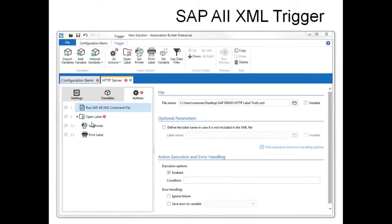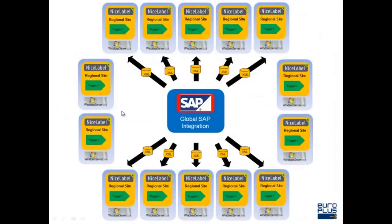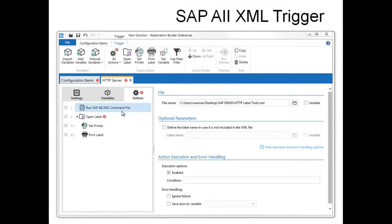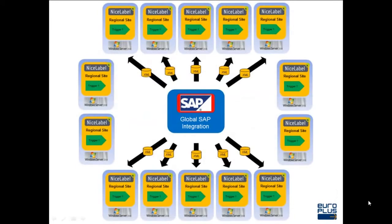If you're using an HTTP server, you can add the Run AII XML command file — this is just another way of sending that data down to the automation server. There are a couple different ways to initiate printing from SAP. When we architect SAP implementations, some customers have global implementations, while others just have a site or multiple sites in the U.S. There are many different types of scenarios and regional locations that have needs for printing, so the Nexware team and our workflow specialists analyze all the information regarding their printing, labels, regional locations, backup needs, and development needs, and we create an architecture.